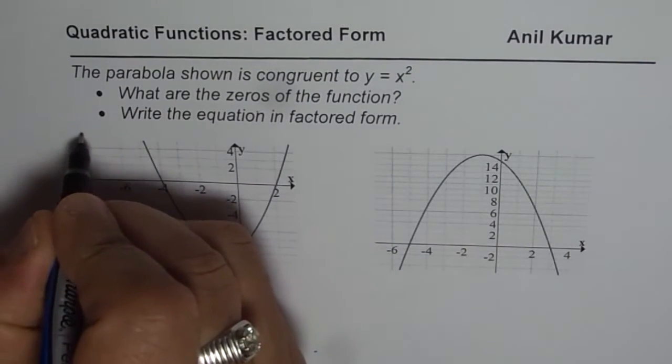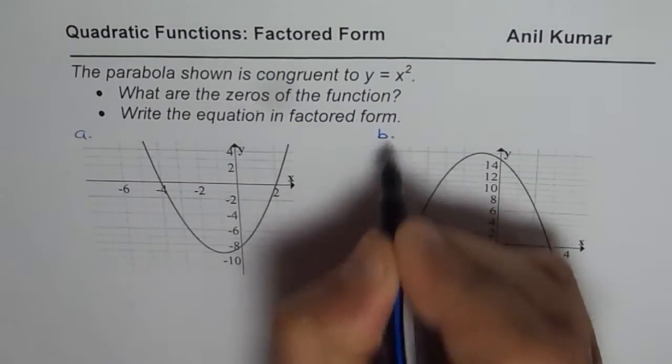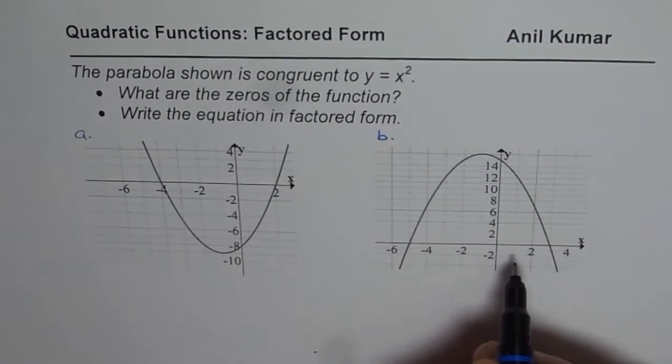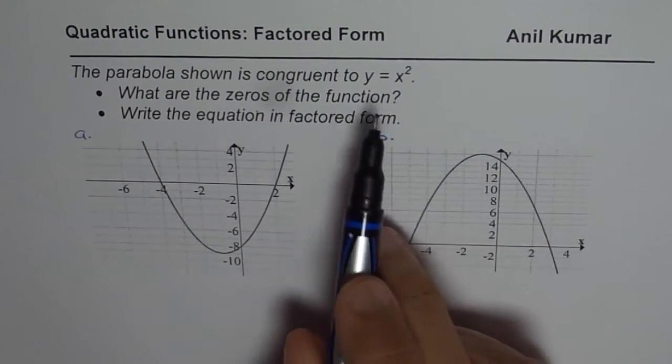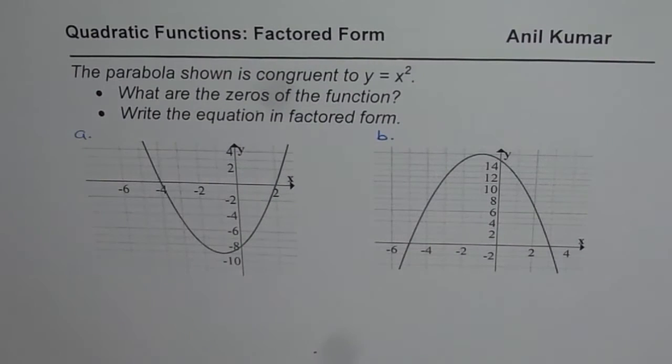So I've added two graphs here, part A and B. You need to find out the zeros and then write down the equations of these parabolas. They are congruent to y equals x squared. You can pause the video, answer the question, and then look into my suggestion.